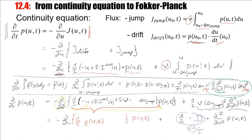This equation — the partial derivative of the density p(u, t) — has a first-order derivative and a second-order derivative, both with respect to u. This equation is called the Fokker-Planck equation.